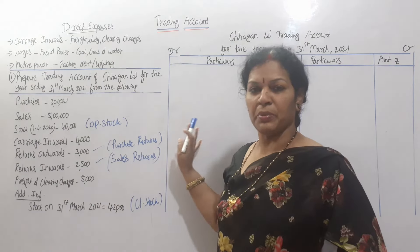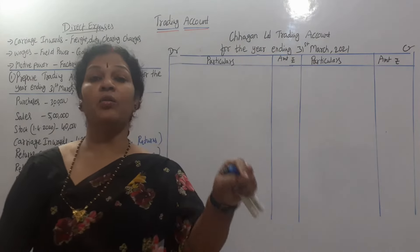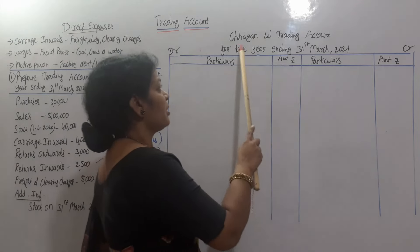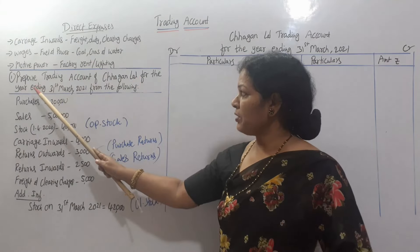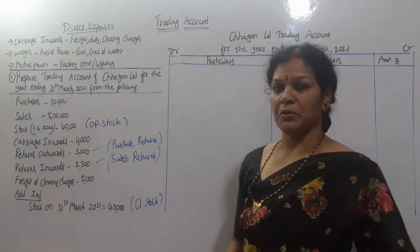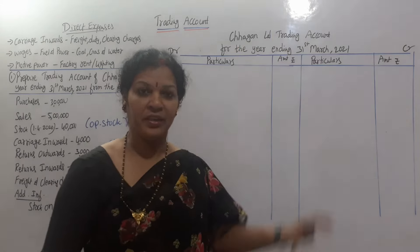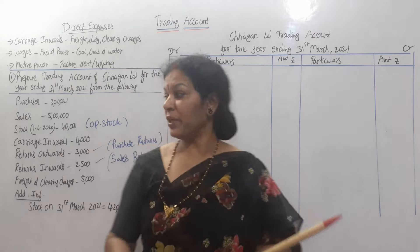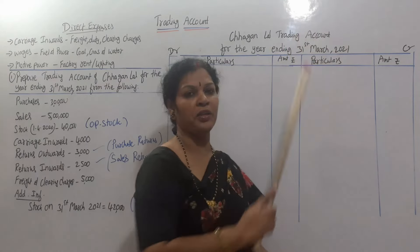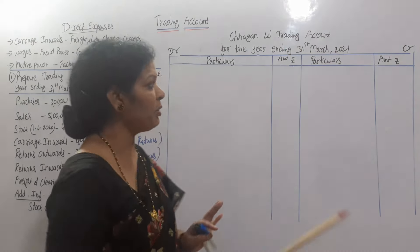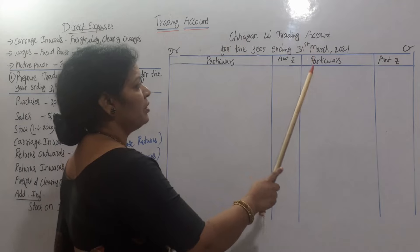Now we will prepare the trading account. We will prepare the heading: 'Trading Account for the year ending 31st March 2021.' You have 4 columns: particular, amount on the debit side, and particular, amount on the credit side. This is the debit and credit structure.